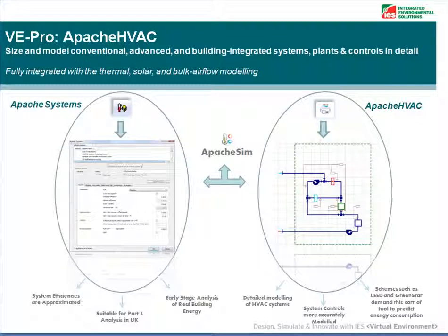The Apache Systems were developed for the PowerDell analysis in the UK. These Apache Systems are fine for early stage analysis of your real building energy loads, as you can predict the building load using Apache Sim and then apply the factors input in Apache Systems to predict the energy consumption of the building and therefore the CO2 emissions.